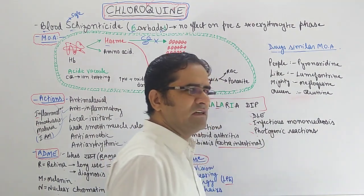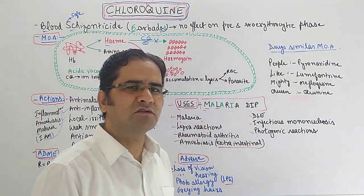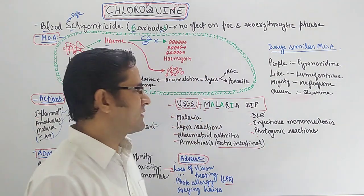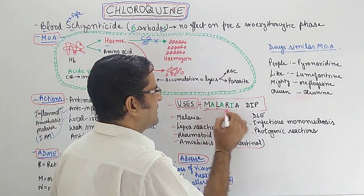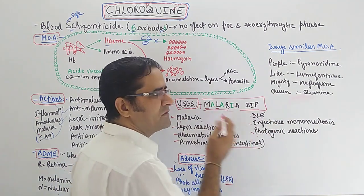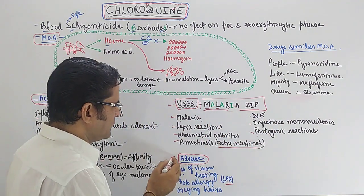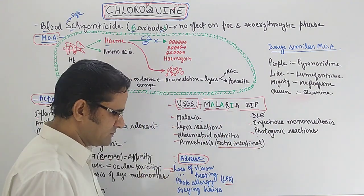For DIP: D stands for discoid lupus erythematosus, I stands for infectious mononucleosis, and P stands for photogenic reactions. So the complete mnemonic for uses is 'MALARIA DIP'.